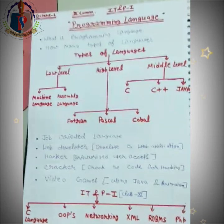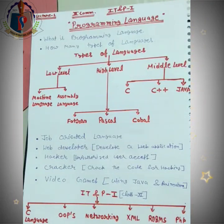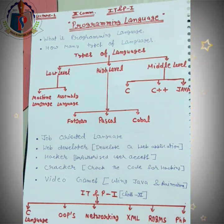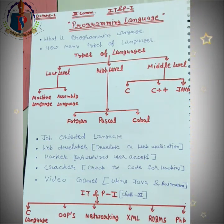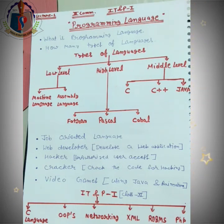C aur C++ ka jo use hai, vo generally desktop applications ke liye kiya jaata hai — jo particular ek system pe run hoti hain. Java language basically web development ke liye kaam aati hai — agar aapko website banana hai toh Java use karte hain. Applications ke liye: Android phone ke liye Android language, aur Apple ke liye iOS use karni padti hai.